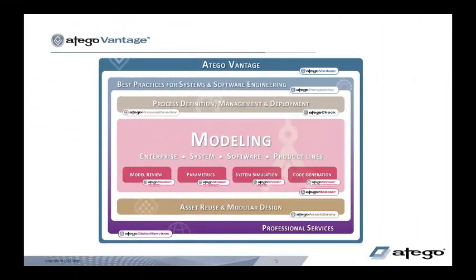Otago's product line engineering solution is delivered as Otago Vantage. Otago Vantage is a combination of processes, products, and people to help you build your systems. Let's take a look at each in turn.